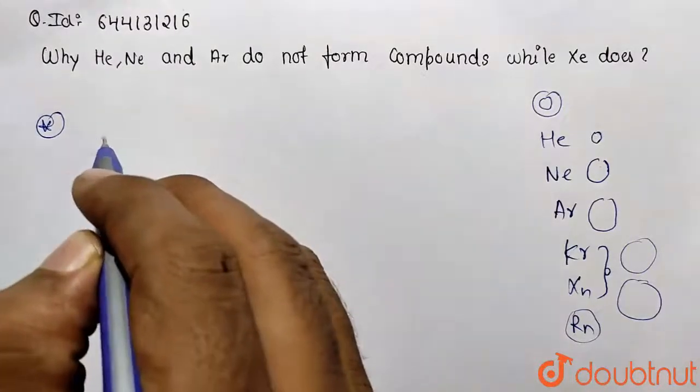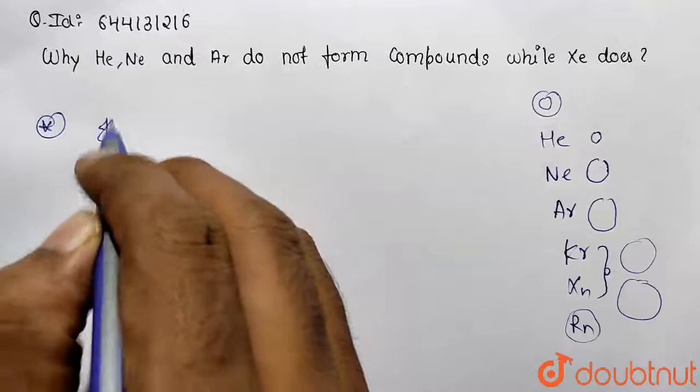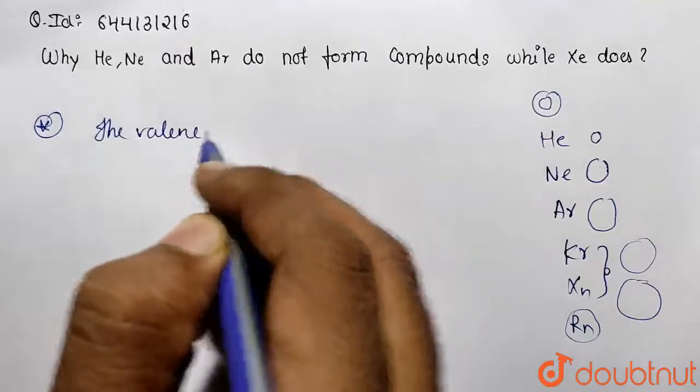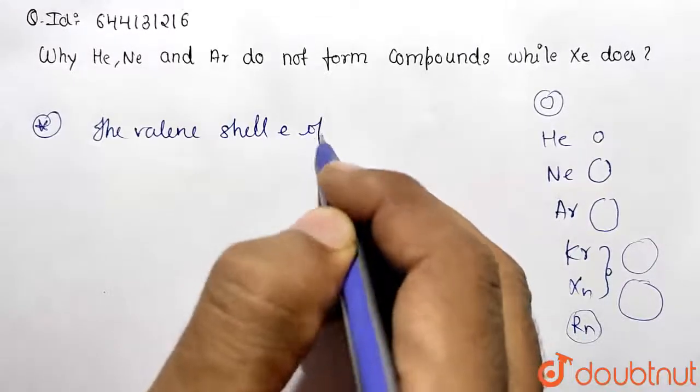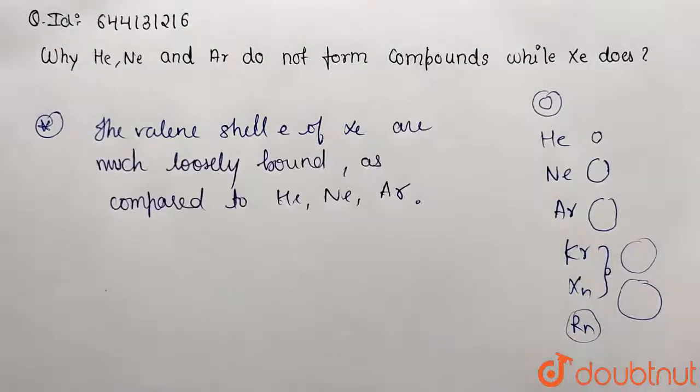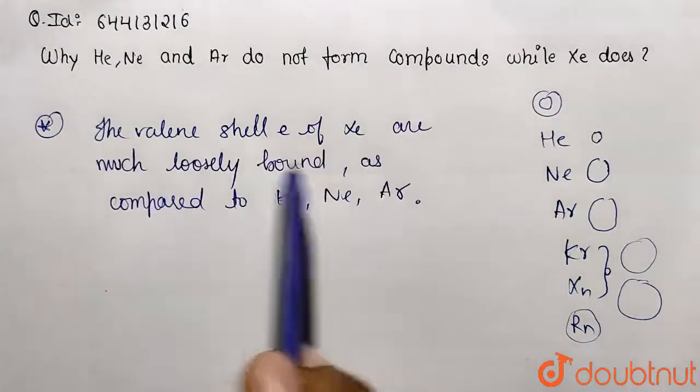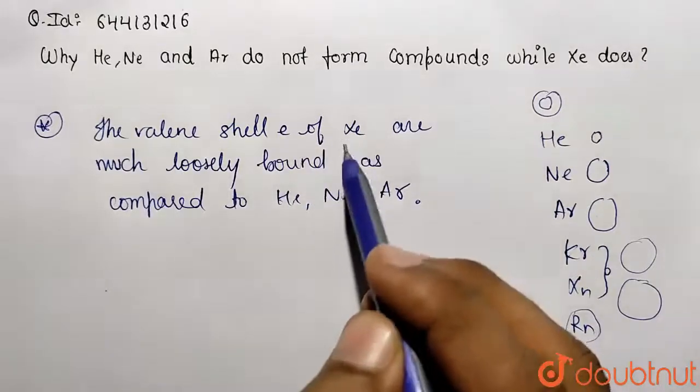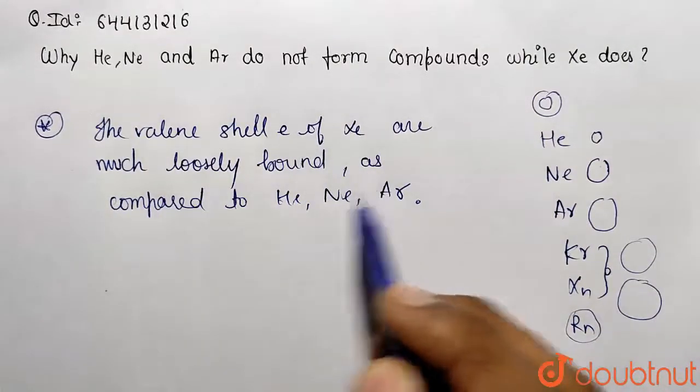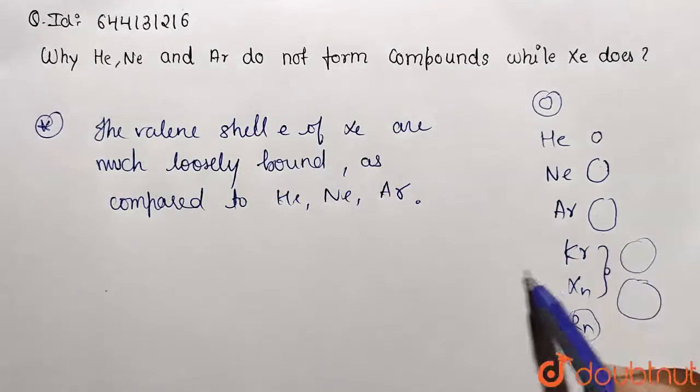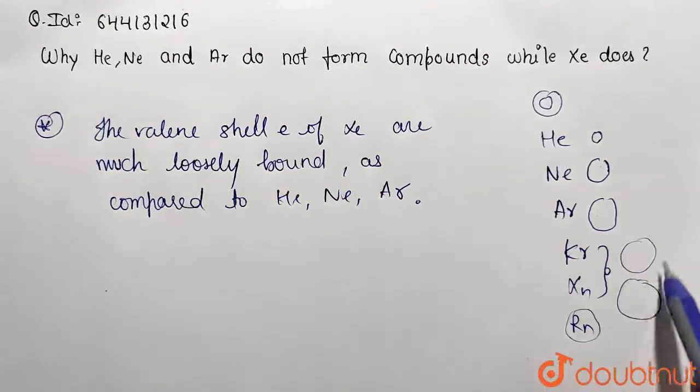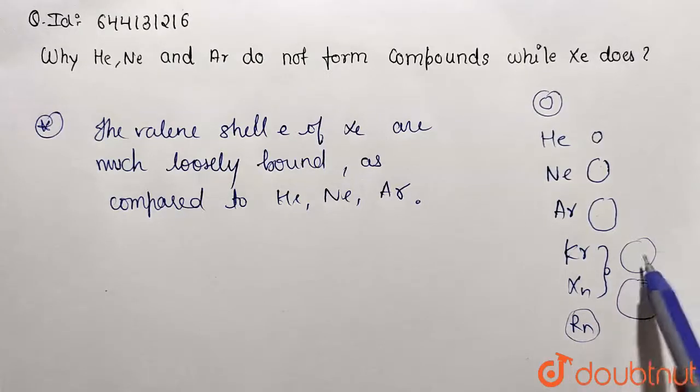We are mentioning the answer that the valence shell electrons of xenon are much loosely bound as compared to helium, neon and argon. Why? Because the distance between nucleus and the last valence shell is going to be large.